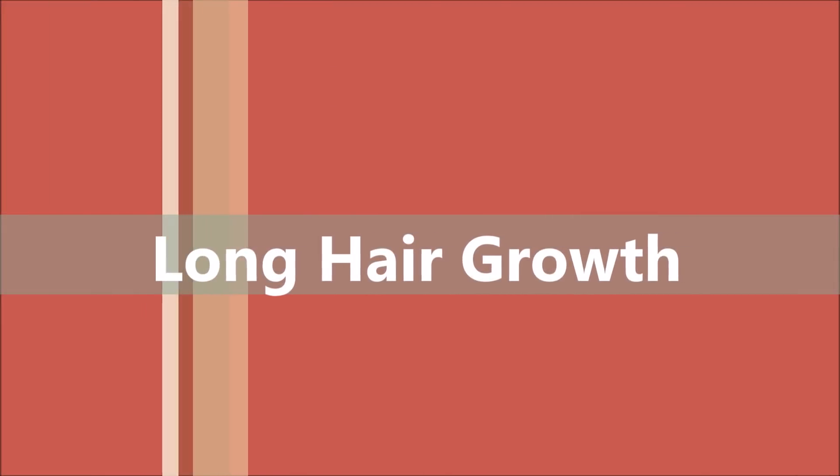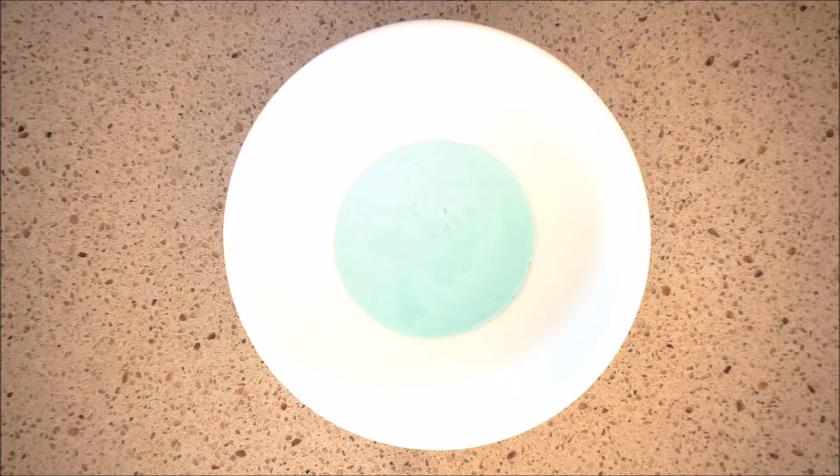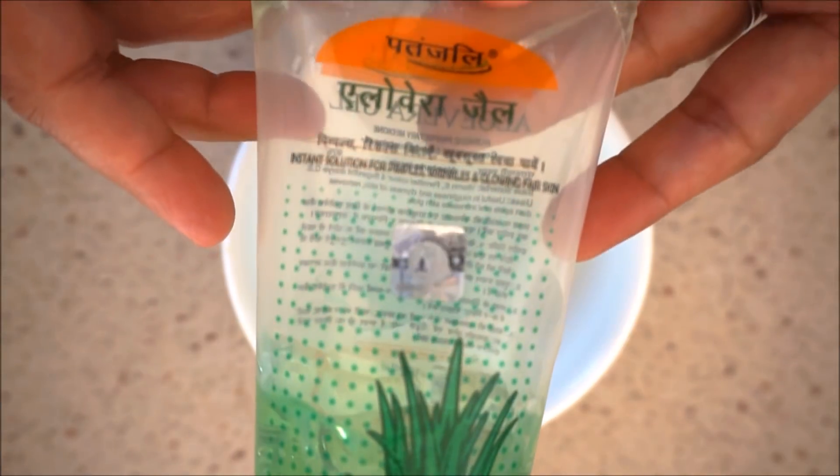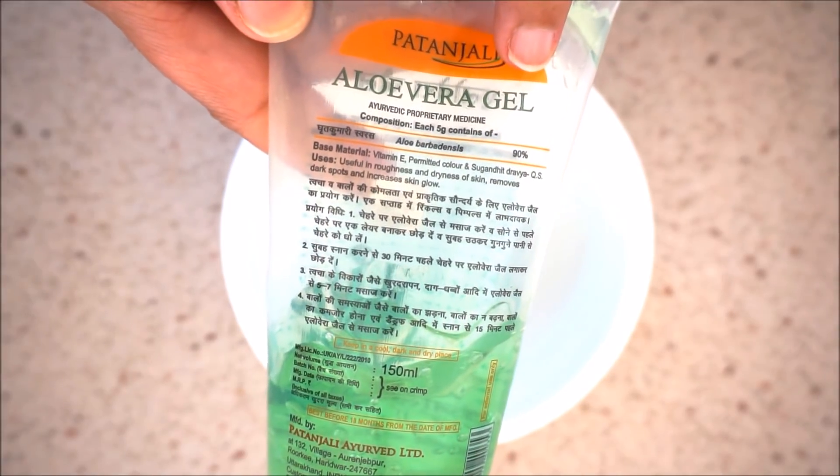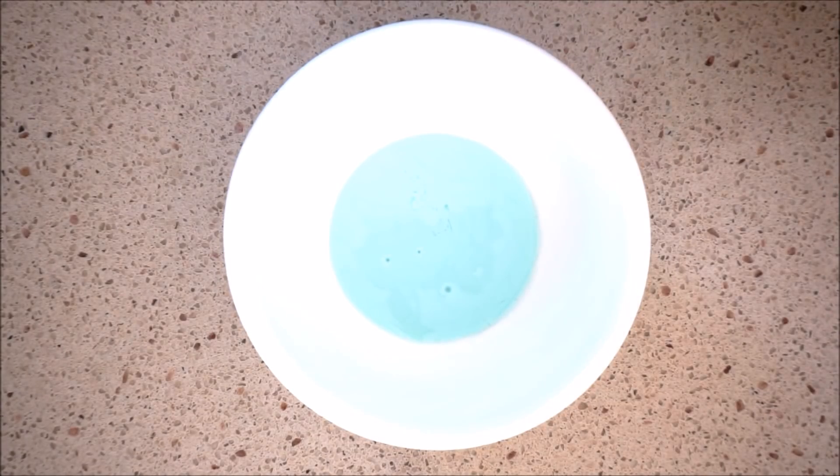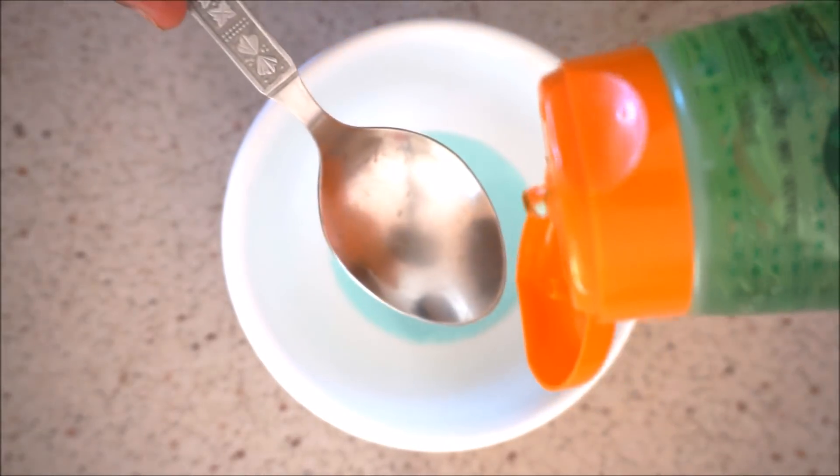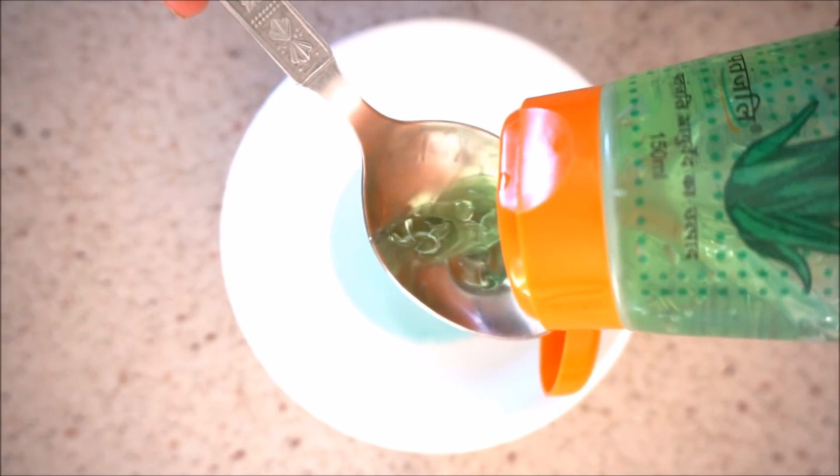If you are looking for long hair growth, we need to add aloe vera gel to the shampoo. If you can find fresh aloe vera, that is much better, but I am using Patanjali aloe vera and this is very good. Take one teaspoon of aloe vera gel and mix it with your shampoo.